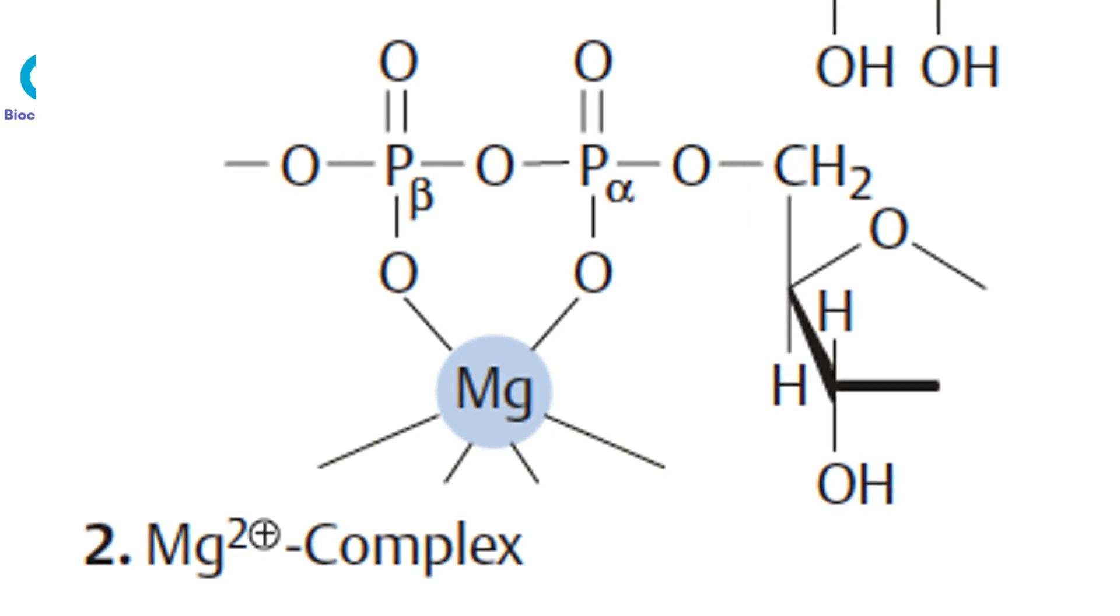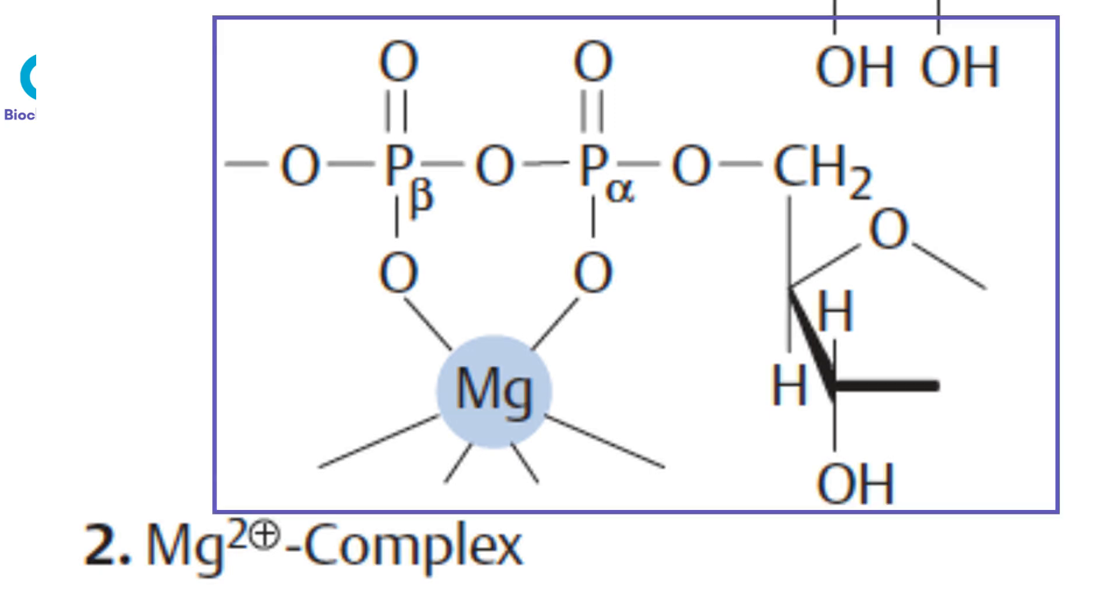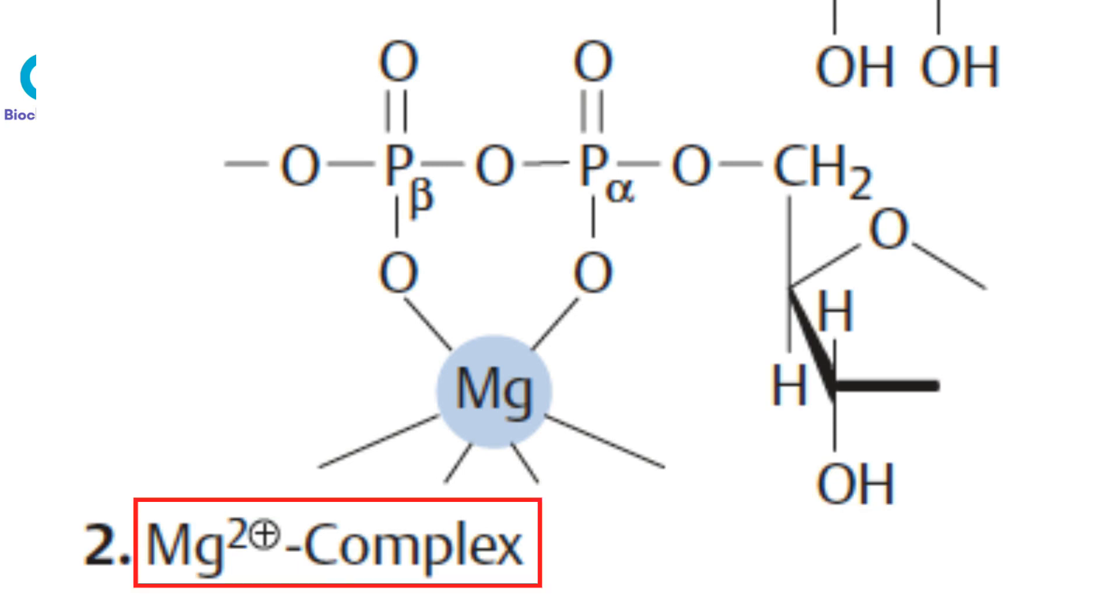ATP binds metal cations with high affinity. The binding of a divalent cation, almost always magnesium, strongly affects the interaction of ATP with various proteins, due to the strength of the ATP-magnesium plus 2 interaction. ATP exists in the cell mostly as a complex with magnesium plus 2 bonded to the phosphate oxygen centers.